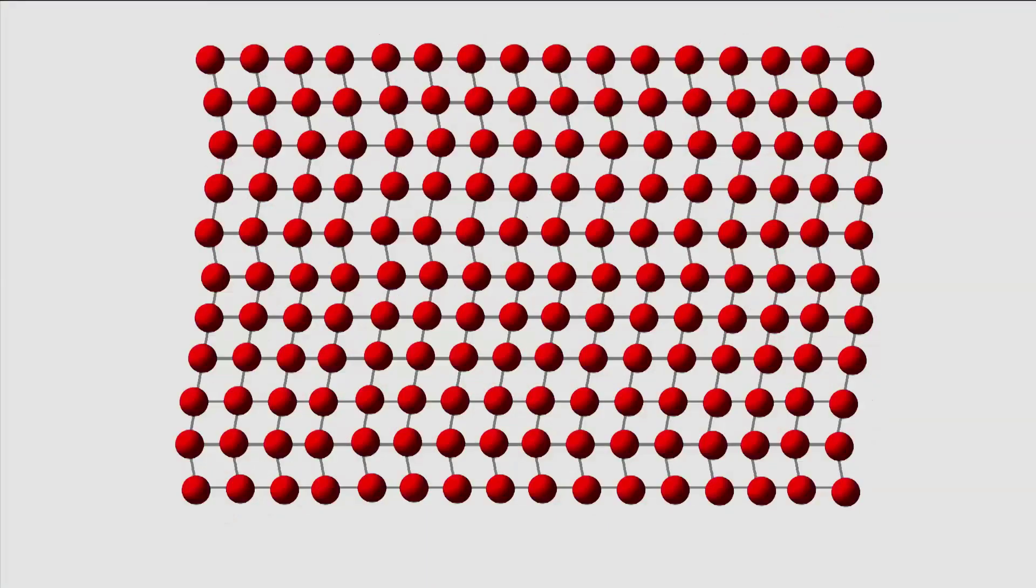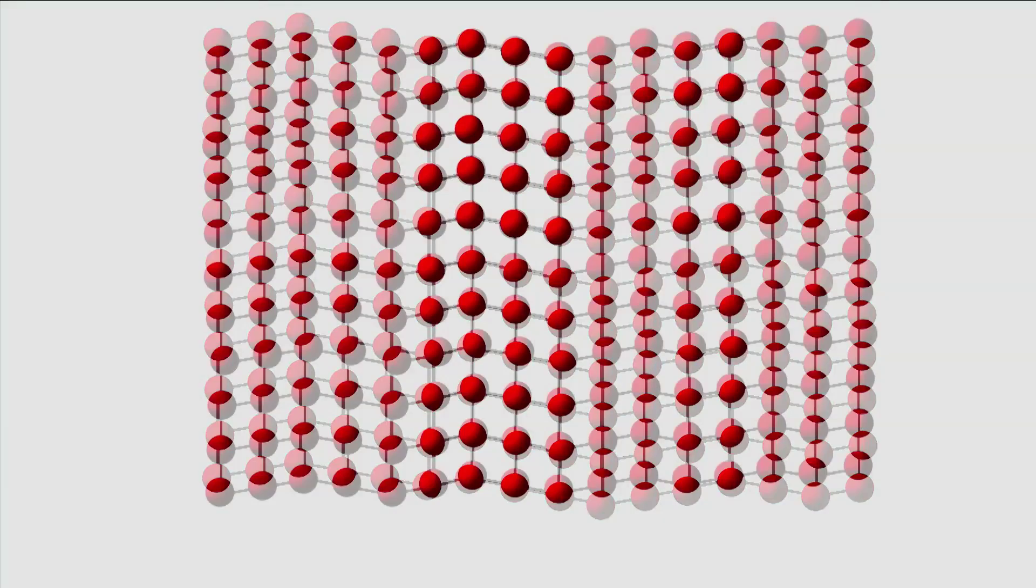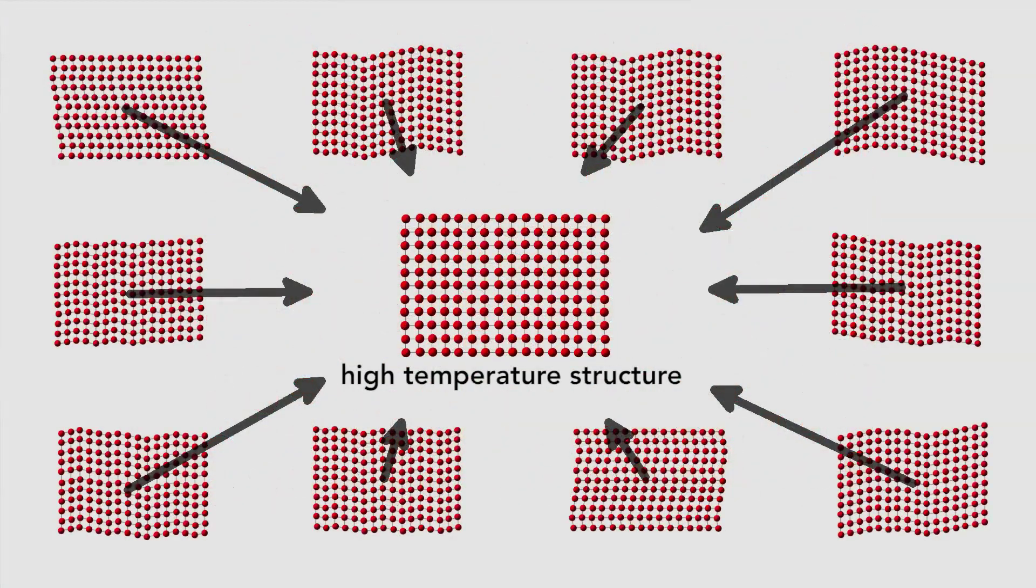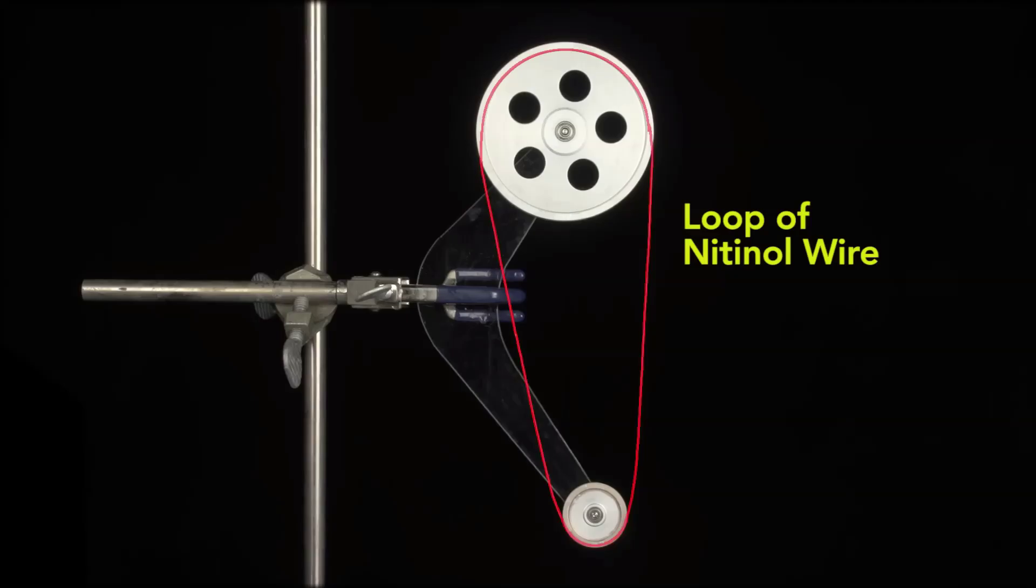Applications of Memory Metals: Medical Devices - used in stents, orthodontic wires, and surgical tools for their biocompatibility and flexibility. Aerospace - employed in actuators and adaptive structures for improved performance and weight reduction.